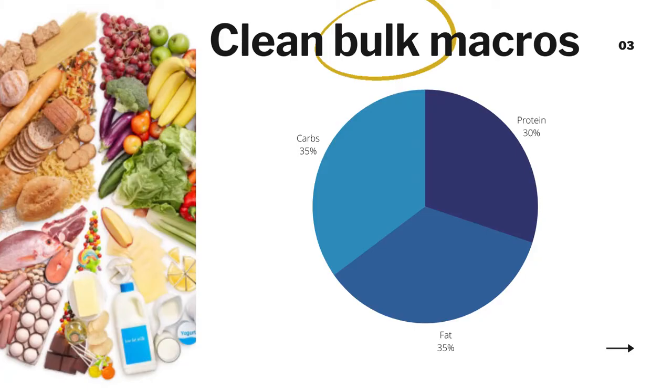First, I want to give you a clear idea of how many percent of your calorie intake should be dedicated to each macro. Keep in mind: 35% goes to carbohydrates, 30% to protein, and 35% to fat. Keep in mind that these percentages are based on your total calorie consumption.